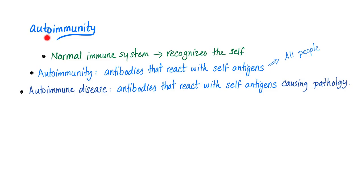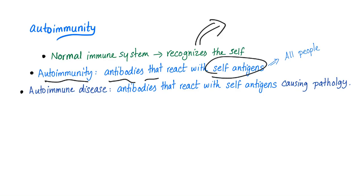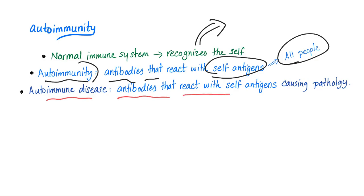Let me discuss in brief the topic of autoimmunity. Normally, your immune system recognizes the self. It only attacks foreign invaders, but it keeps the self intact. However, autoimmunity involves antibodies that react with self-antigens. All people have autoimmunity in their body. The problem happens with autoimmune disease — these are antibodies that react with self-antigens causing pathology.